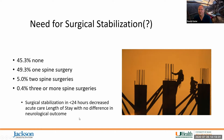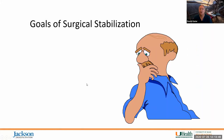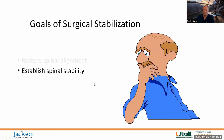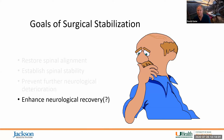The initial studies that tried to look at decompression within the first 24 hours had very small sample sizes because consent couldn't be obtained quickly enough in most acute spinal cord injury traumas. The goals of surgical stabilization are to restore spine alignment, establish stability, prevent further neurological deterioration, and hopefully provide neurological recovery.